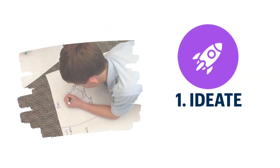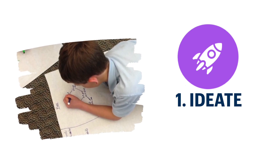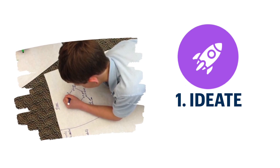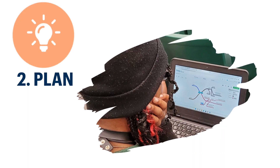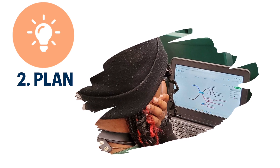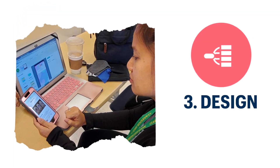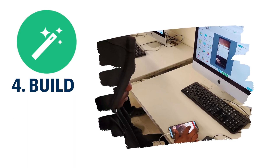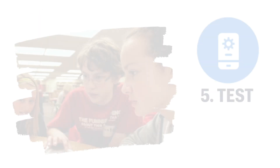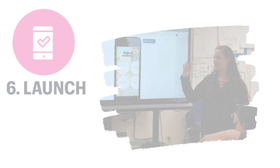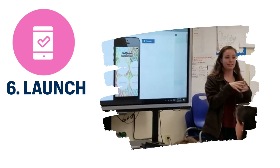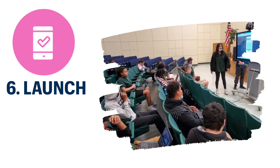Start brainstorming and find an idea you're passionate about. Research and critically think about the functions of that app. Design and create your visuals. Build app screens and customize them with functions. Test out your app with others and get feedback. Then pitch your app to an audience.